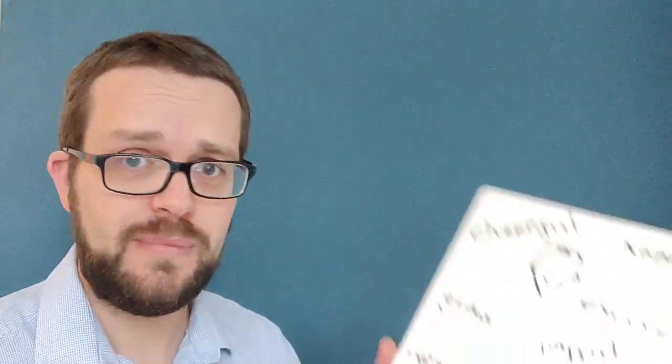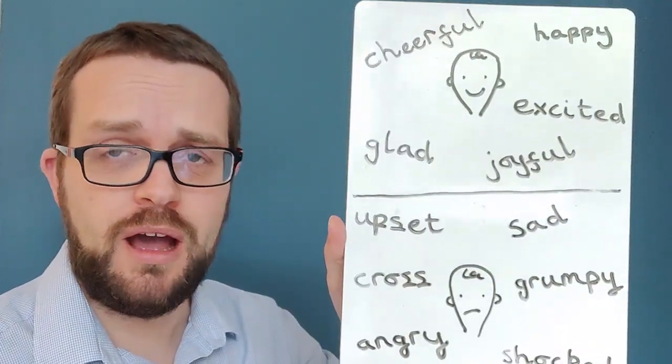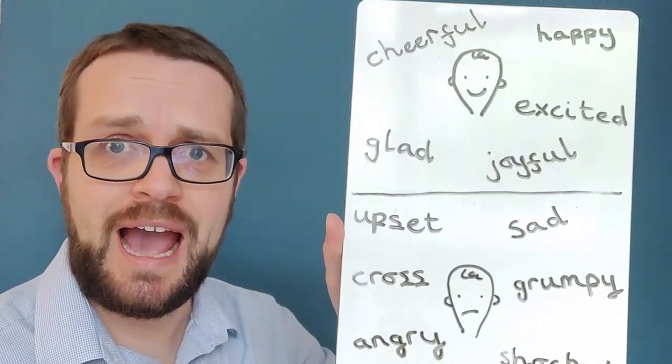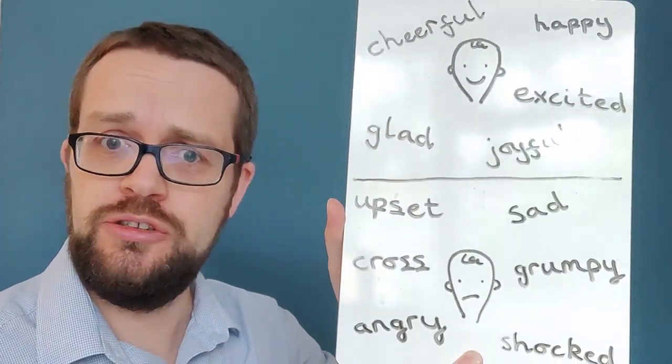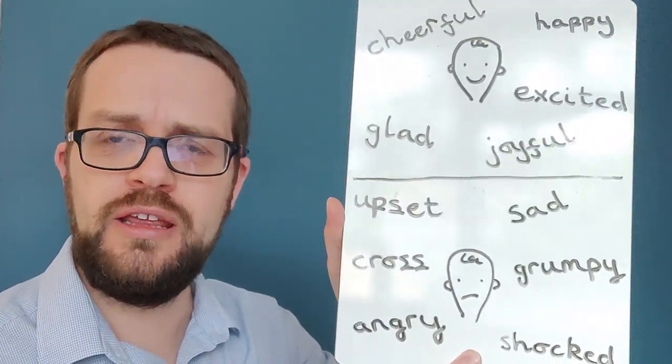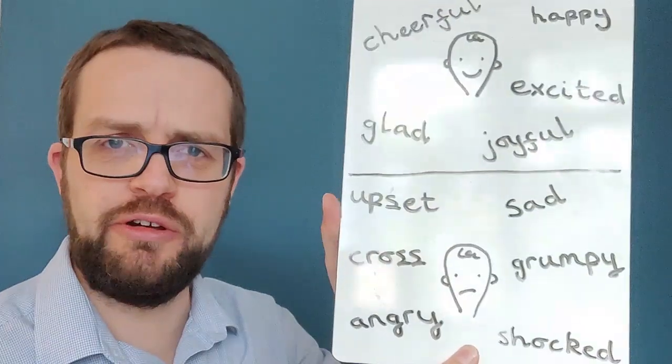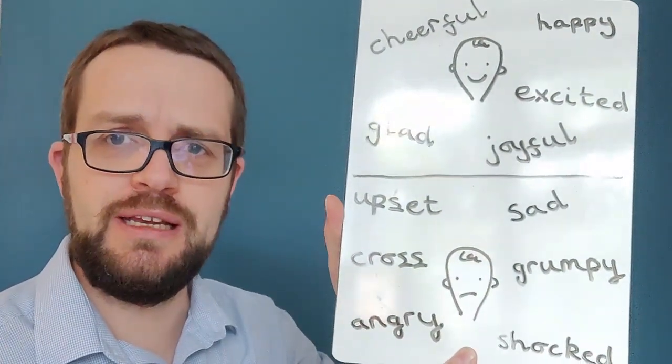How did you do, children? Could you think of lots of words that described how Wilfred was feeling? If you were a bit like me, you might have found it easier to think of words for describing when he was sad more than when he was happy. Here's what I came up with today. I thought of cheerful, happy, excited, glad, and joyful. And I used those pictures of when things were going well for Wilfred to infer that meaning.